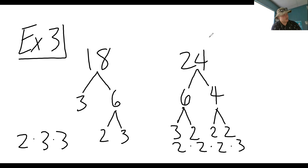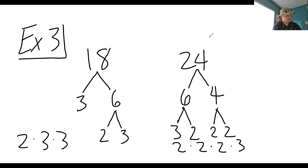So what we would do is multiply those numbers out. The prime factors of 18 and 24 are twos and threes. From a pool of three twos and two threes, we can form either 18 or 24. So the least common multiple of 18 and 24 is the product of three twos and two threes.